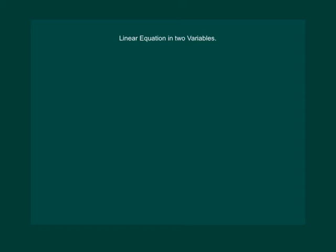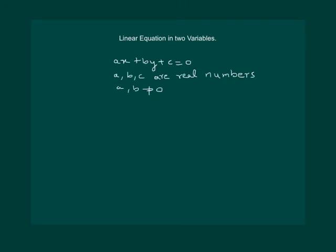We have studied linear equations in two variables in 9th class, chapter 4. You can see those videos and then proceed further. Let us recall that any equation which can be put in the form Ax plus By plus C equal to 0, where A, B, and C are real numbers and A and B cannot both be 0, is called a linear equation in two variables. Here x and y are the variables.